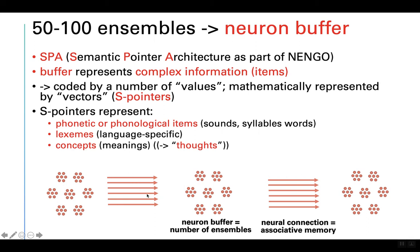In the brain, each item activated in one neuron buffer may be transformed or forwarded to the next buffer, and to the next — that is neural processing. The neural connections define how this processing and forwarding is done specifically. These neural connections are represented in Nengo by associative memories.